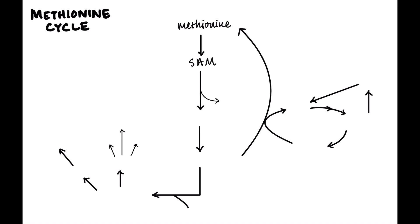Methionine gets converted into something called SAM. SAM holds a methyl group, and that methyl group can be donated to a variety of different biochemical processes. When it donates that methyl group, it becomes SAH — it's now stripped of that methyl group.